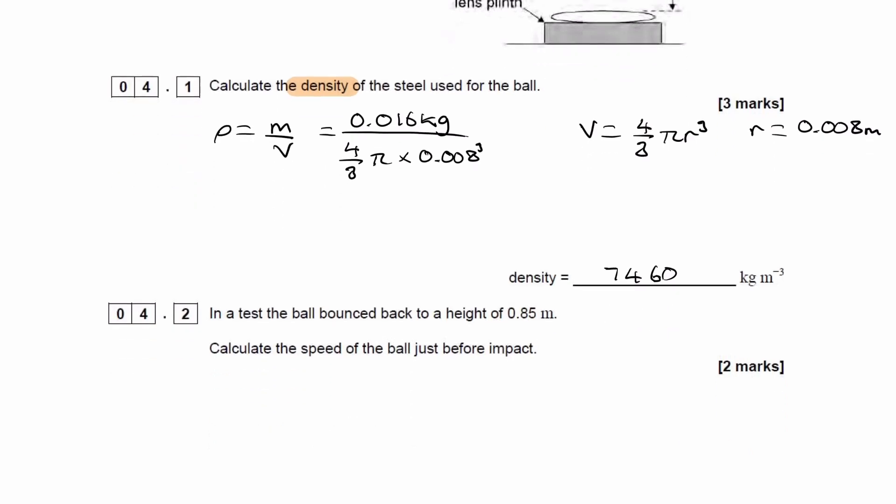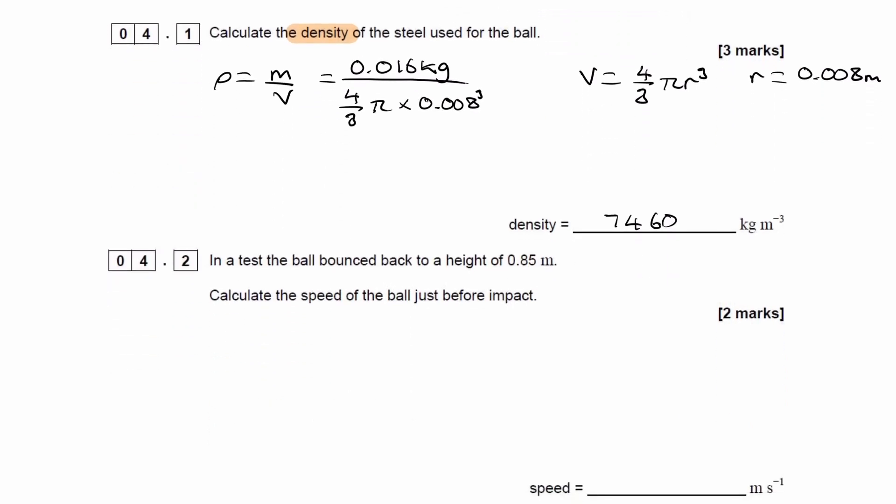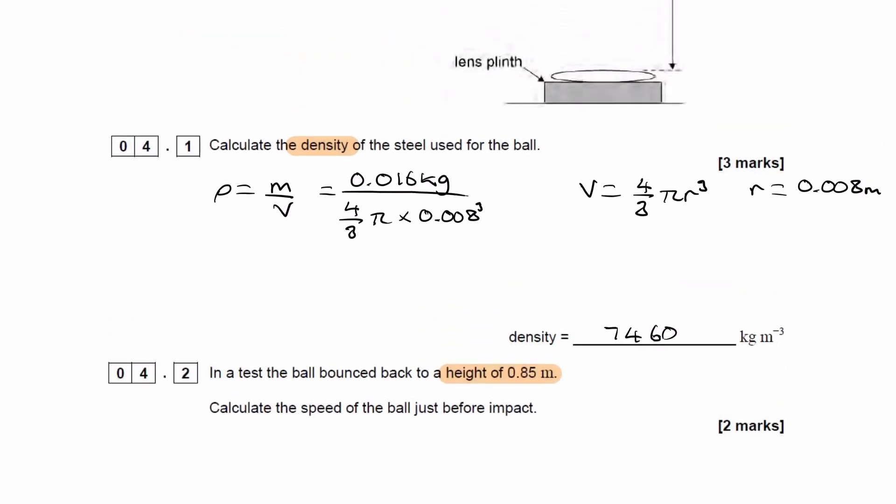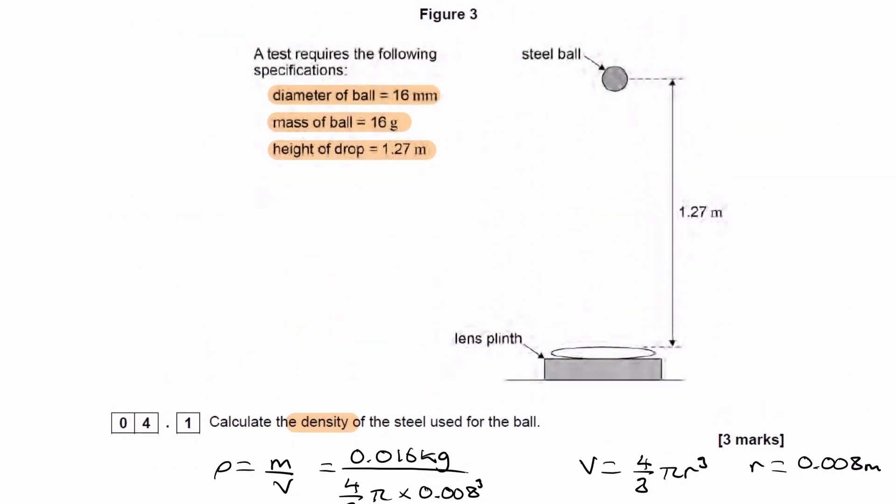Right, so for part 2, in a test, the ball bounced back to a height of 0.85 meters. So remember that what's happening here is that we're dropping the steel ball, it collides with the lens, and then it bounces back up. We know we're dropping it from a height of 1.27 meters.